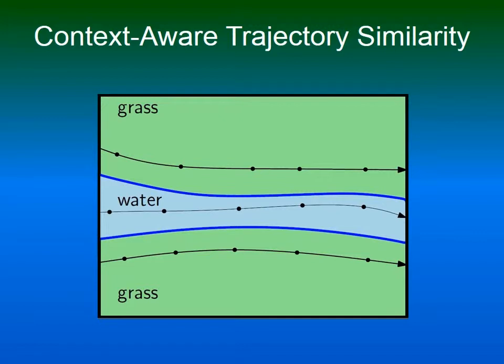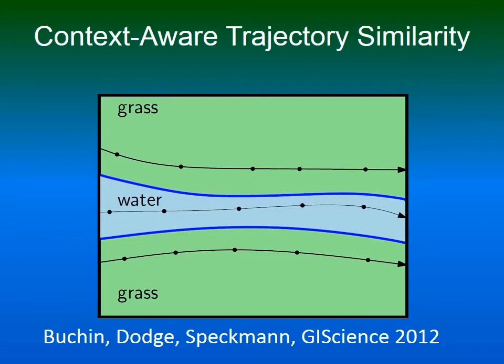For this, we first model the underlying geographic context by a polygonal subdivision. Next, we integrate this into our similarity measure. We define the distance between points using the geographic distance as well as a context distance. For details, please see our paper.